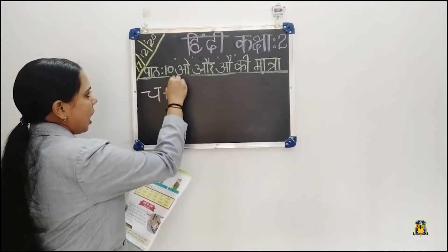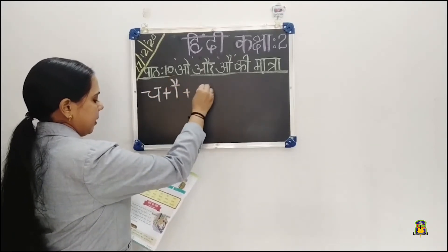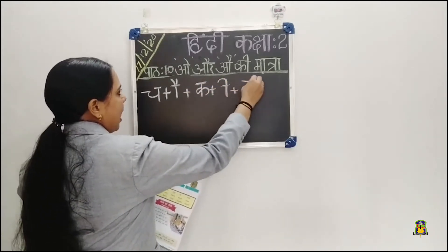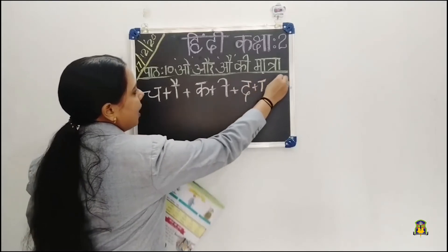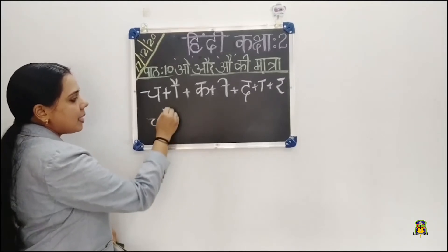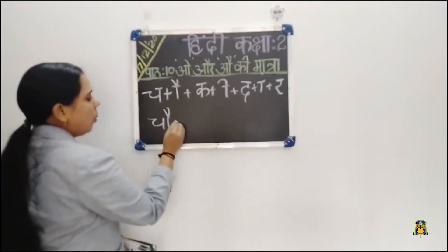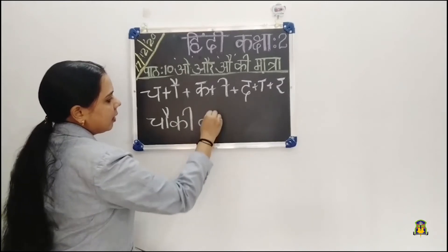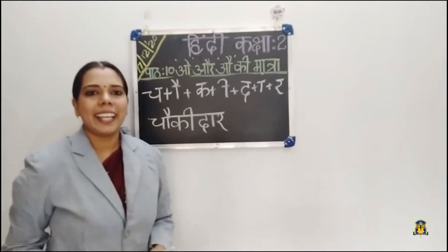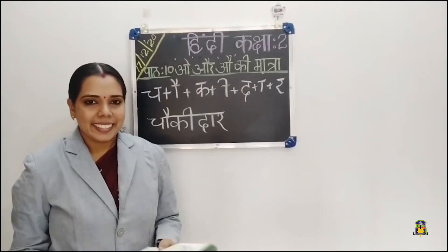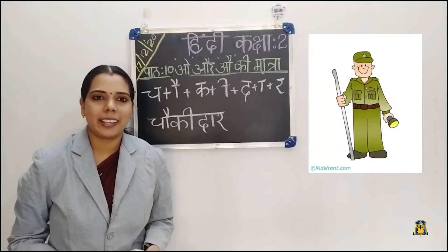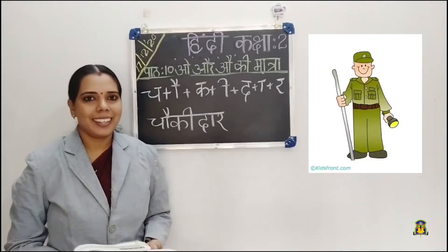Next example: cha plus au matra, ka plus ee matra, da plus au matra. The word is chaokidar. Do you know who is chaokidar? Janitor, otherwise watchman. Chaokidar means watchman.